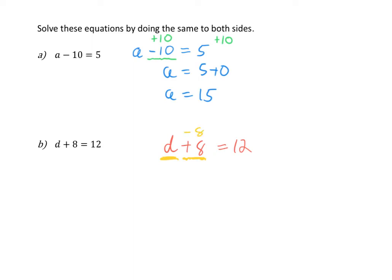What I do to the left-hand side, I also need to do to the right-hand side. So my equation becomes d is equal to 12 minus 8, so d is equal to 4. By doing the inverse operation to both sides, I can work out that the value of d is equal to 4.